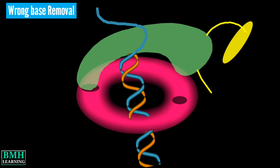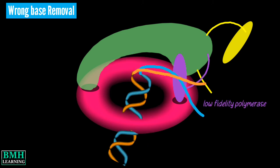In this case, to bypass the lesion, the low-fidelity translesion DNA polymerase Pol4 — which is able to synthesize over the lesion — is allowed to access the clamp and DNA. As Pol4 is not very processive,